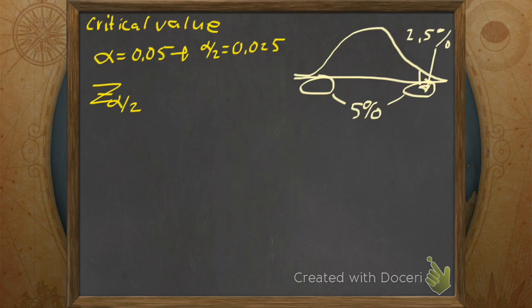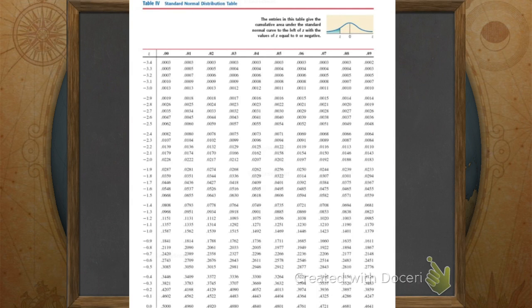We're trying to find z value for a given area. Yeah. So we go into our area portion. Recall that our area portion is on the inside of the chart. What are we looking up on the inside of the chart? Which number? 0.025. So we're going to go and we're going to find the value that's closest to 0.025.